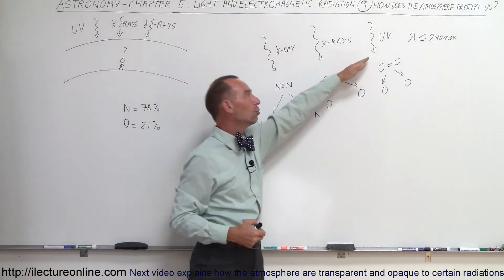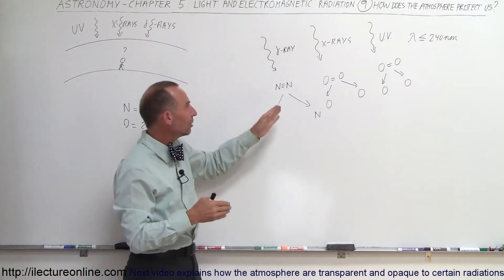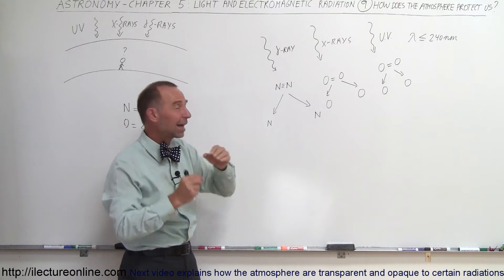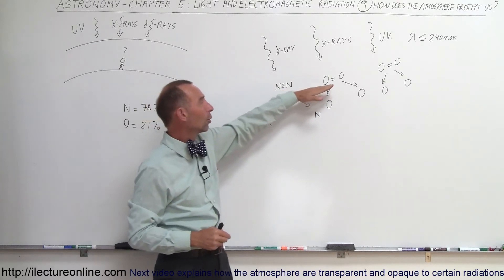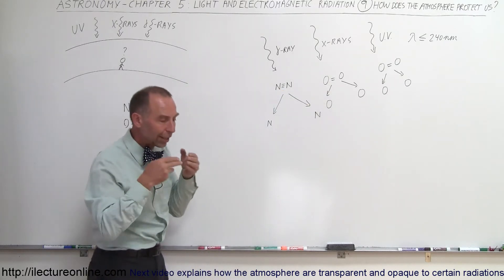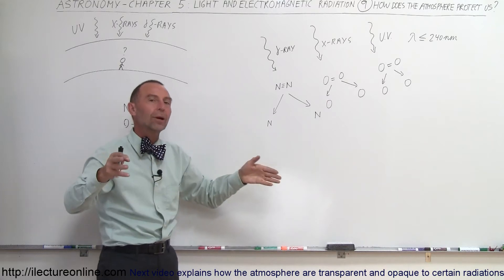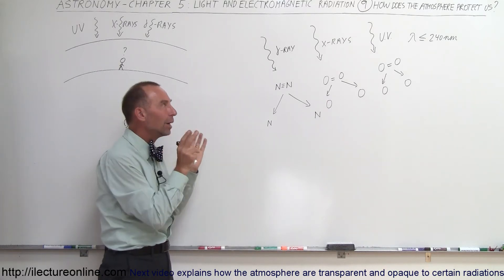Same with the high-energy UV radiation. It will hit either a nitrogen, if it's very high-energy UV radiation, or an oxygen molecule. It absorbs that energy, the bonds break, and that's how the radiation is stopped.